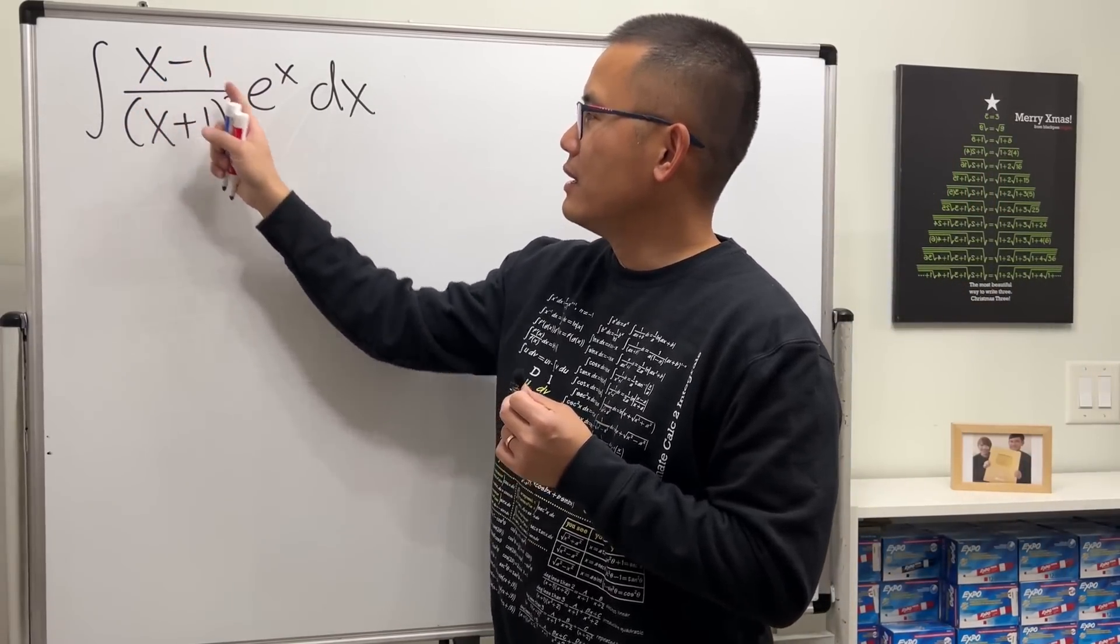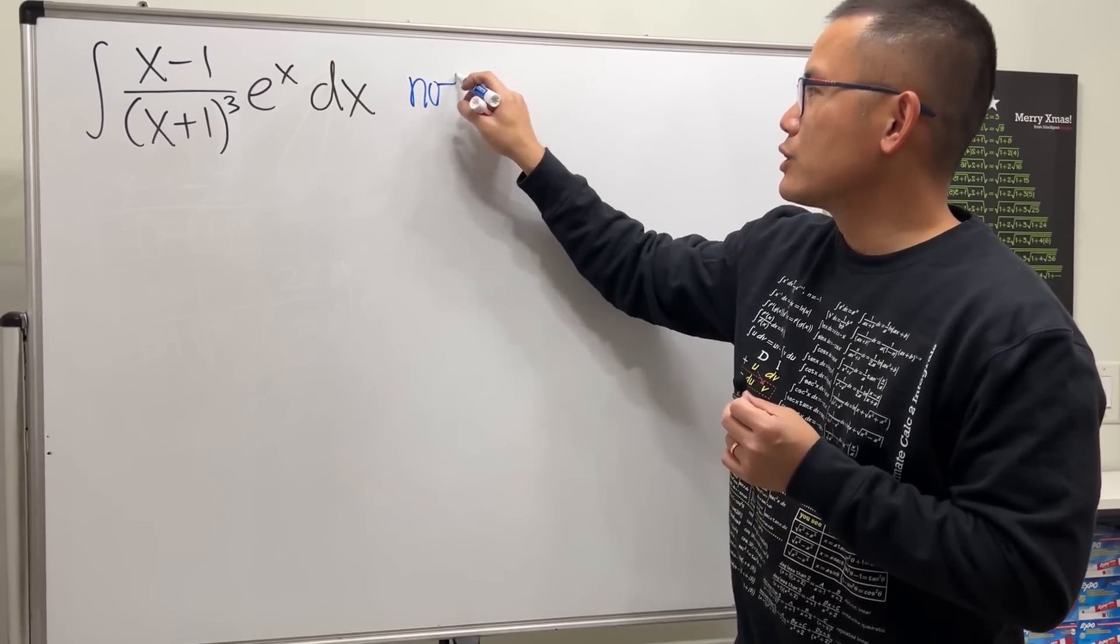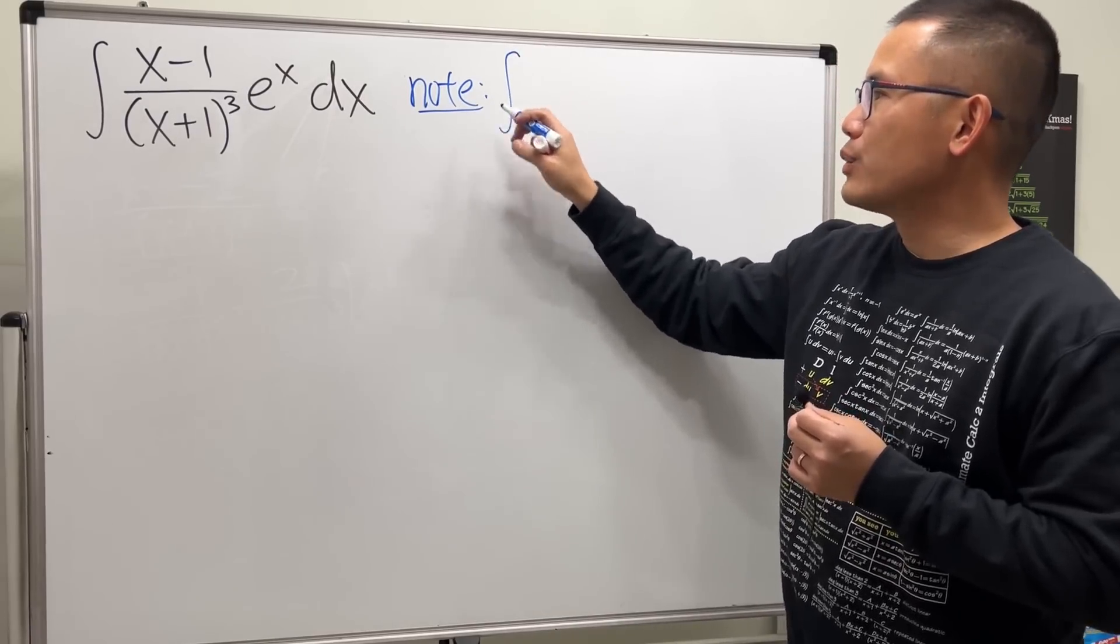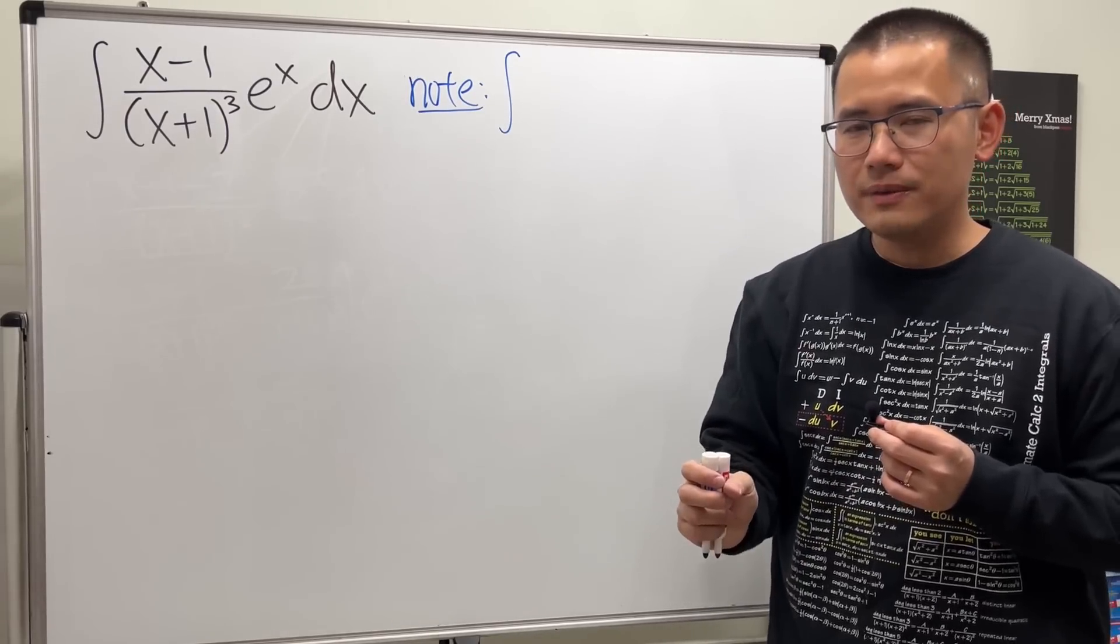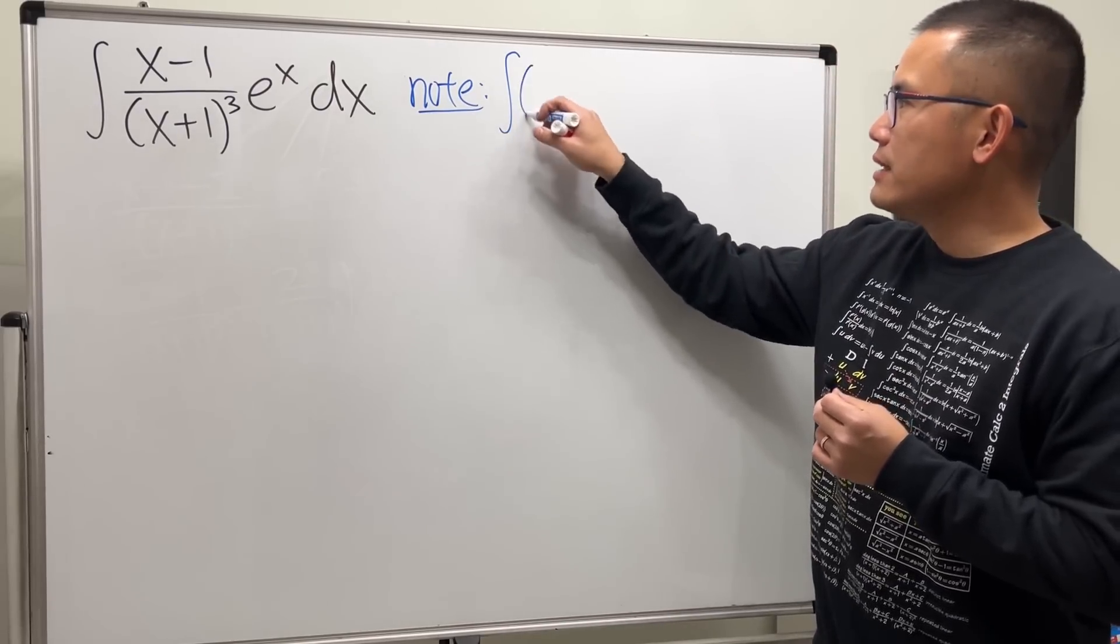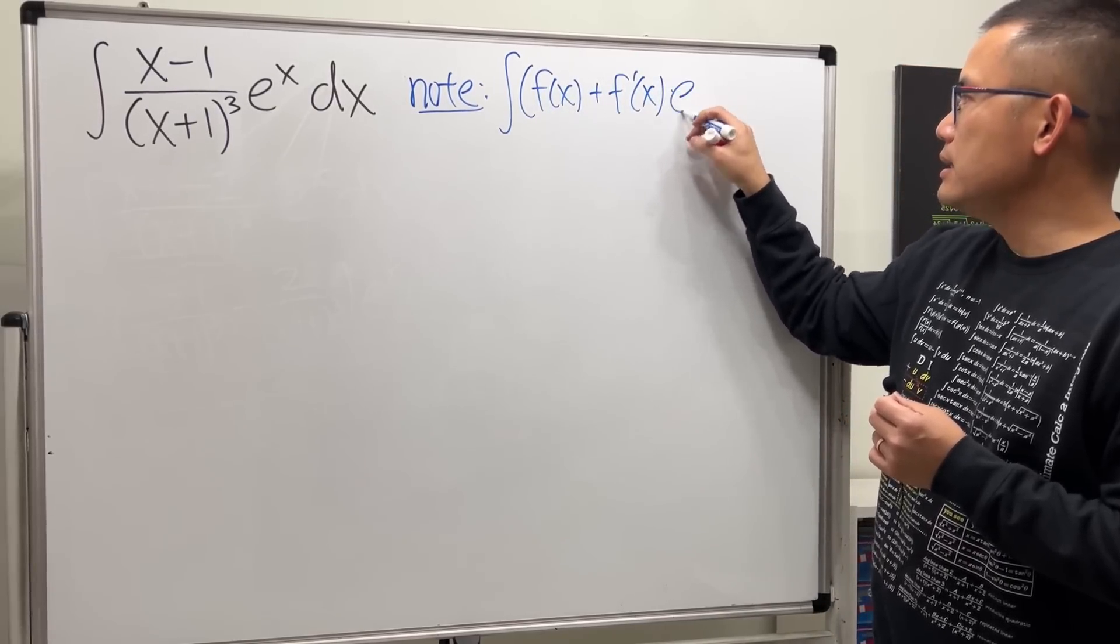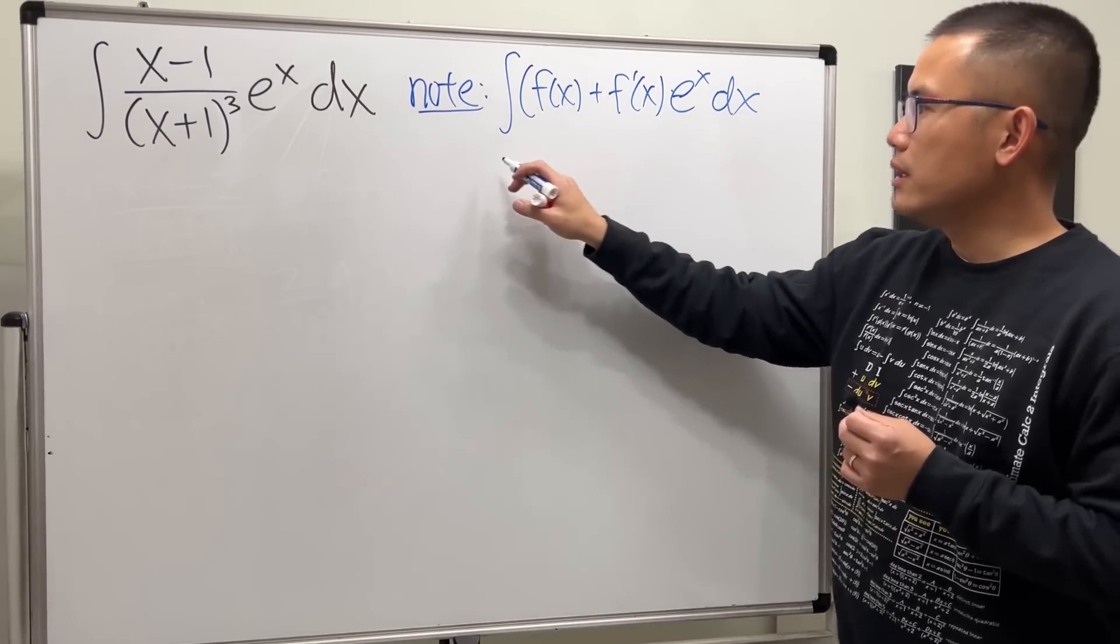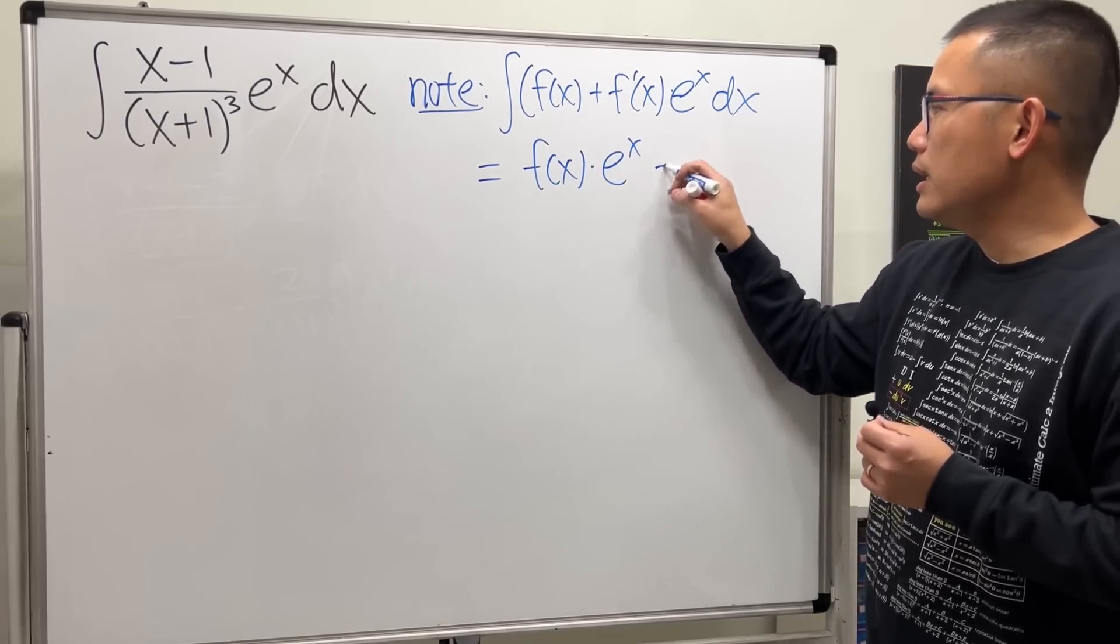Notice that we have a rational function times e^x, so this right here is what we hope to see. If we can somehow break this down into a function plus its derivative, then it's going to work out so nicely. Because if we have the integral of a function plus its derivative and then times e^x, then this right here is just going to give us the function times e^x.